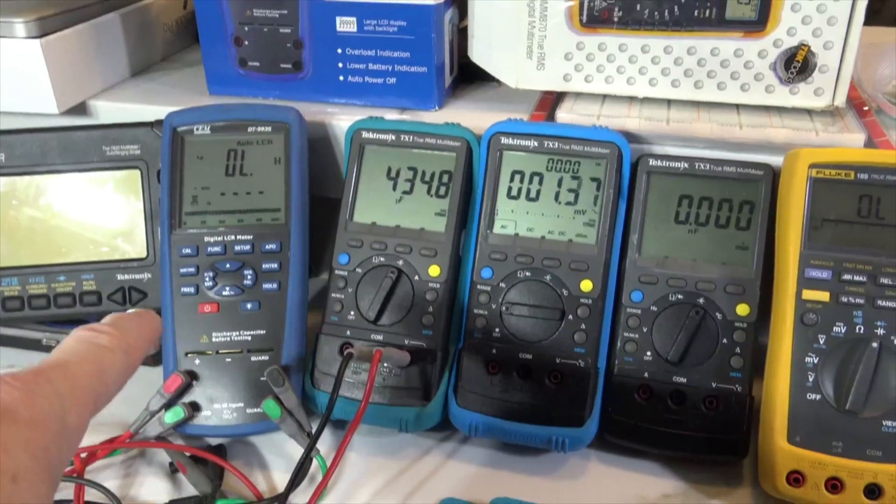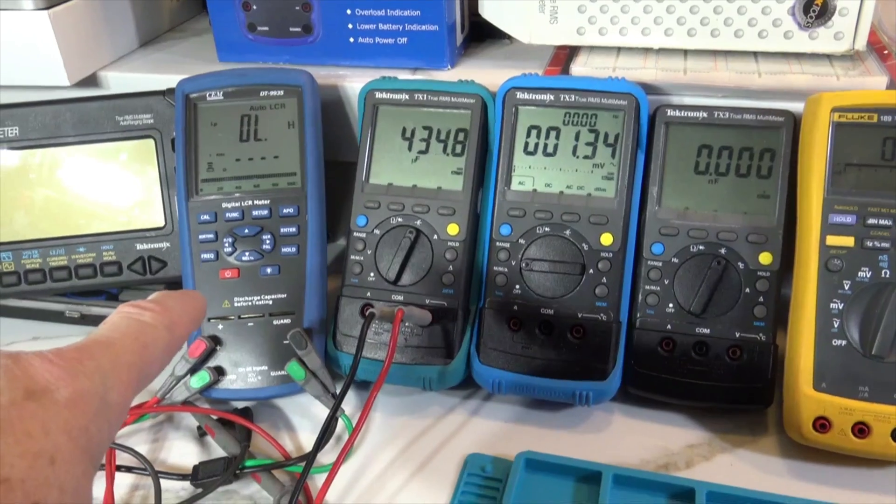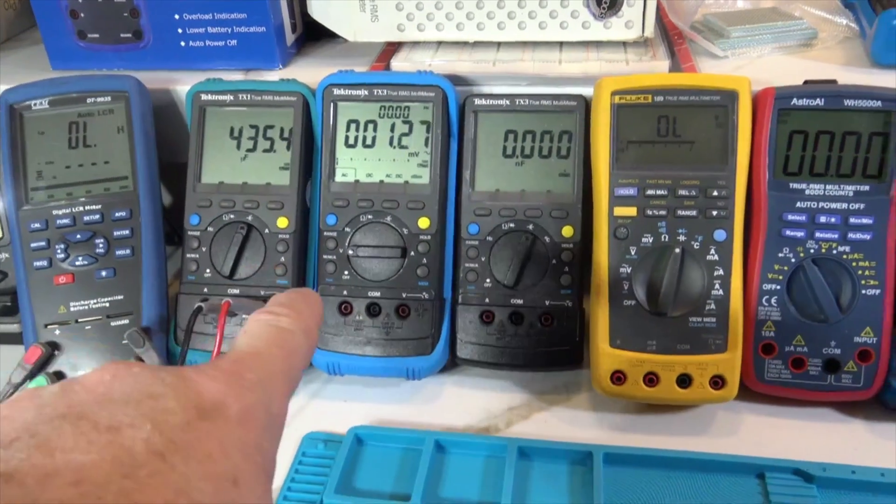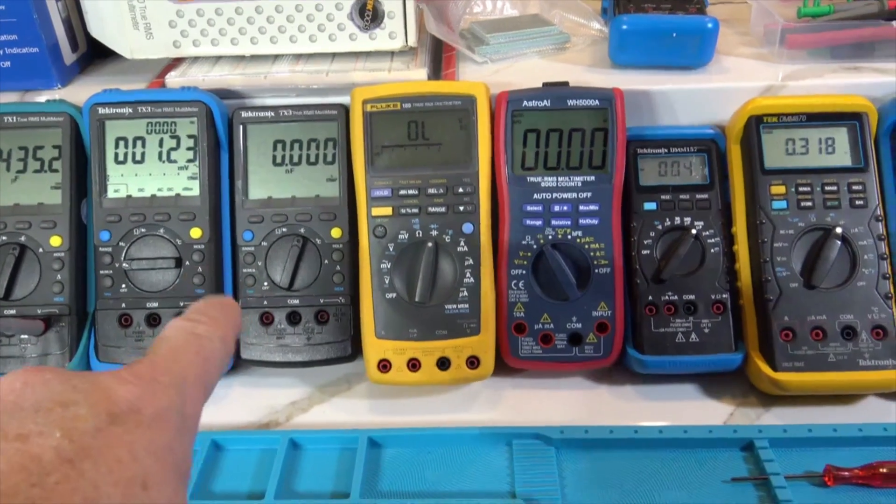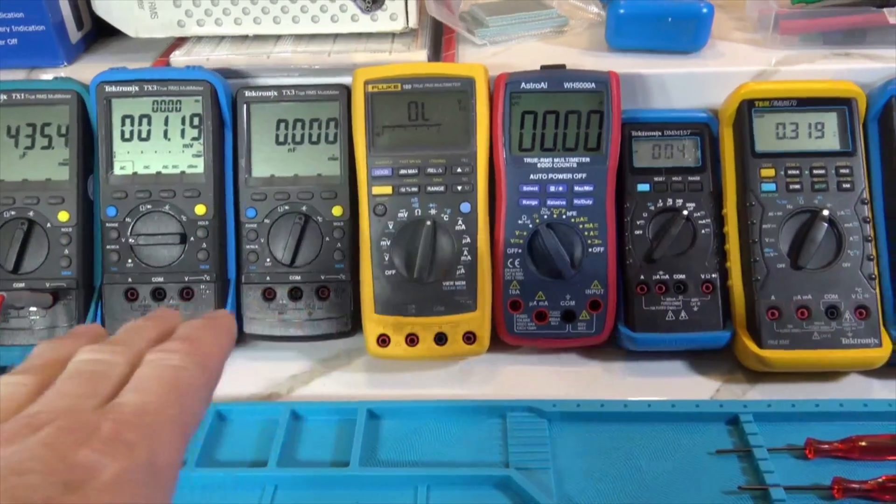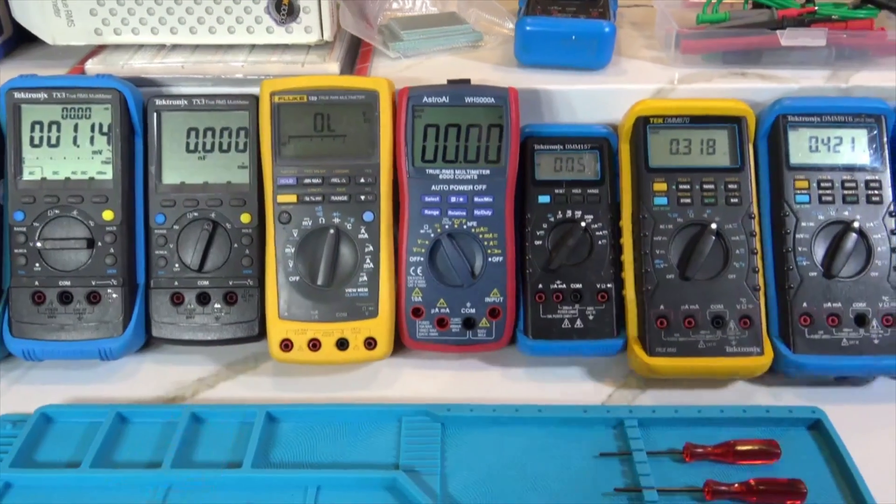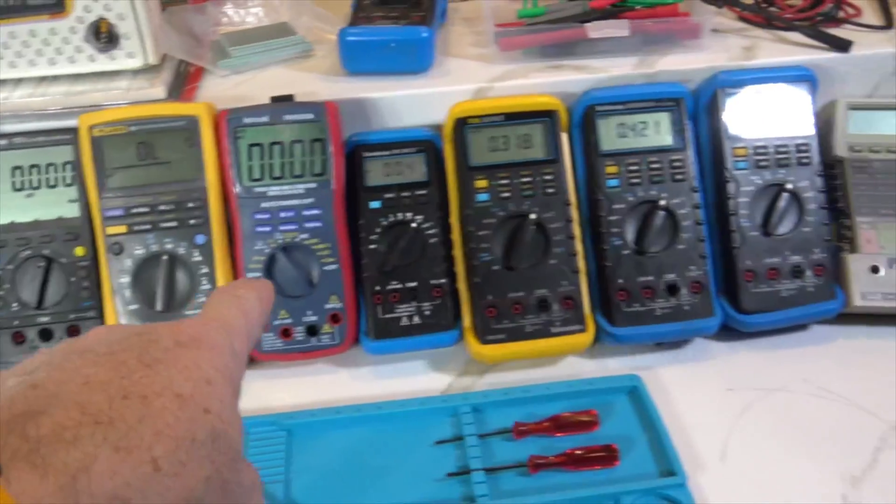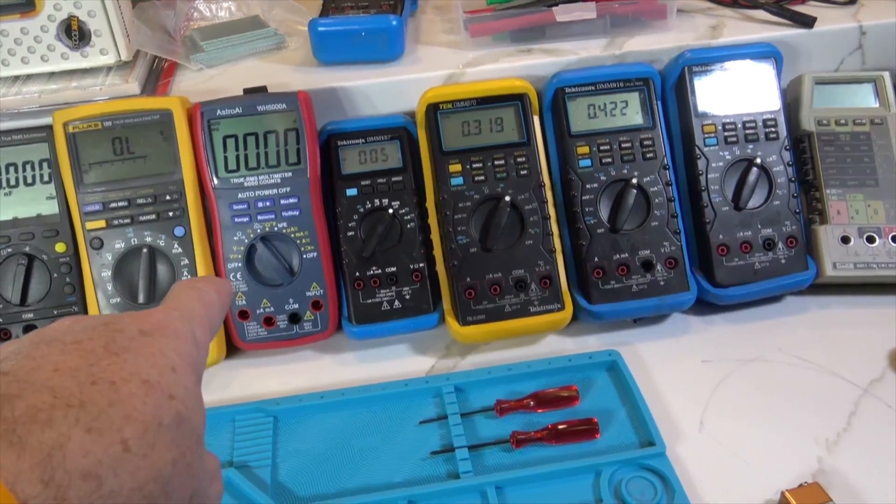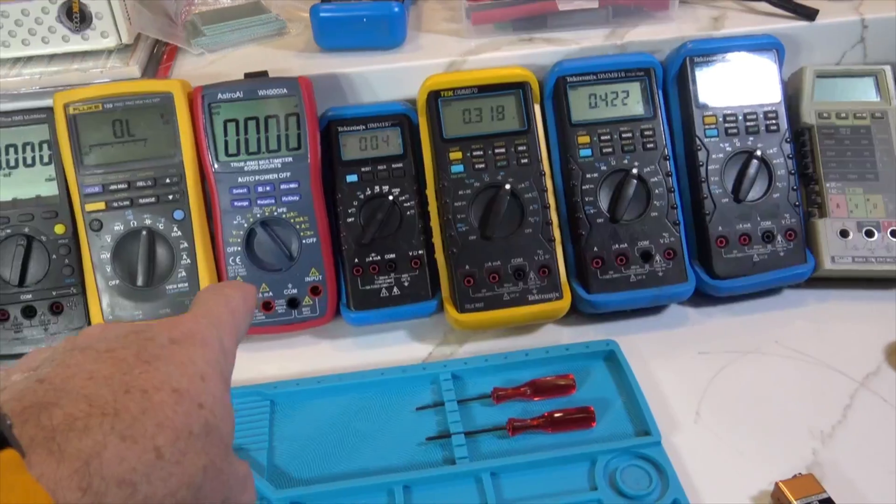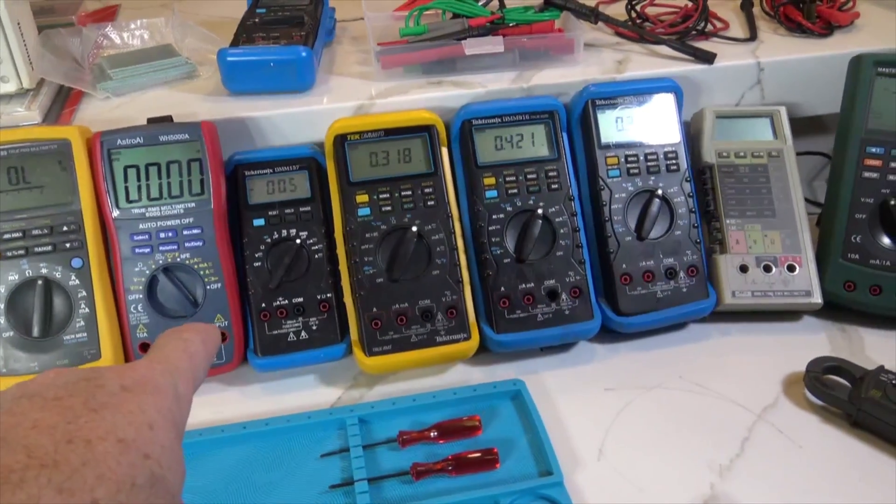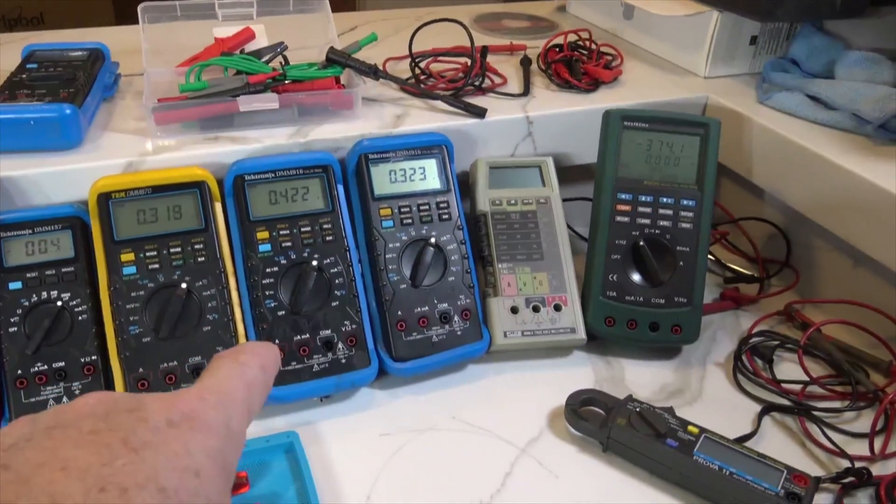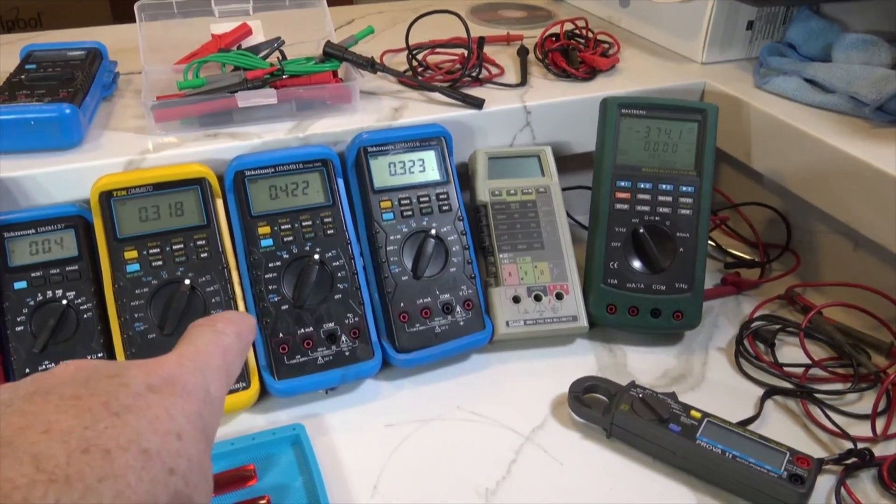Okay, for a closer look, here's the CEM LCR meter, the DT9935. Tektronix TX1, TX3, another TX3 without the holster, just to test all the meters individually and to see within the same brand if they're measuring the same thing. The Fluke 189, the Astro AIWH5000A, the least expensive meter in this group, and DMM157 from Tektronix, DM870 from Tektronix, and two DMM916s here on the end.